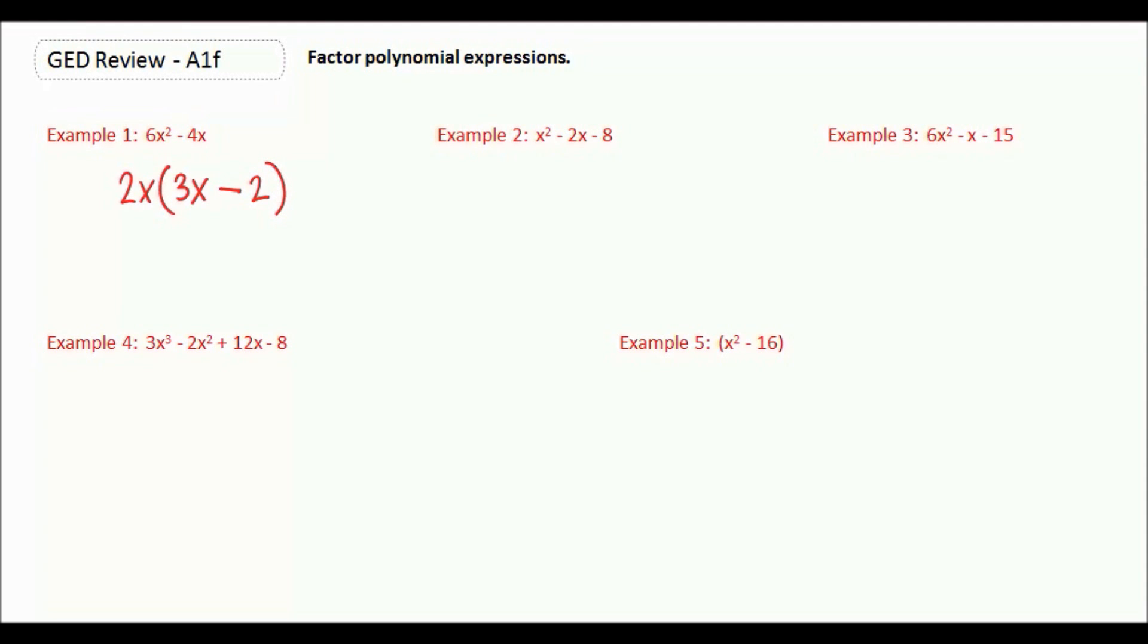In example 2, it's a trinomial, so it's a little bit different. There's nothing that goes into each of our terms. But what we can do is kind of like a reverse foil. We're going to create two sets of parentheses. Well in this one it's not bad, because in order to create x squared, it's just going to be x and x. Because x times x gives us the x squared.